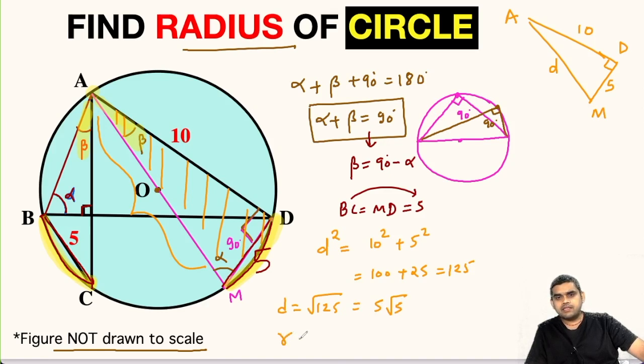So the radius is half of the diameter. So this will be 5 root 5 divided by 2 units. We have successfully found the radius of this given circle. If you want to get more such interesting questions, do not forget to subscribe my channel. Bye bye.